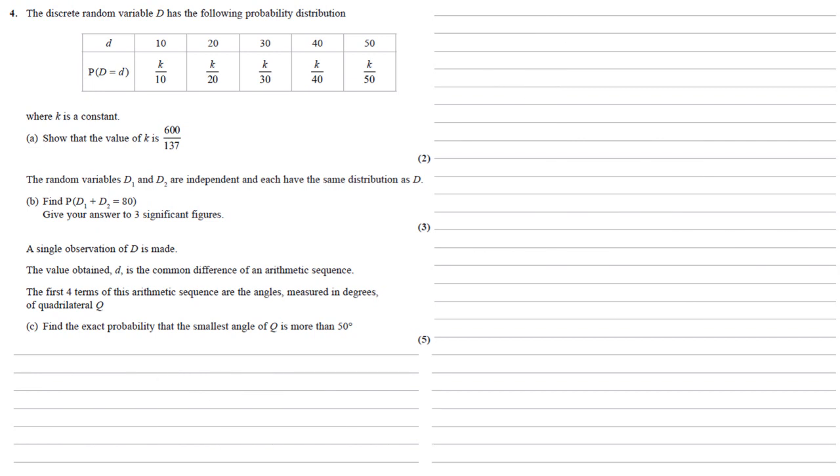A single observation of D is made. The value obtained, D, is the common difference of an arithmetic sequence. The first four terms of this arithmetic sequence are the angles, measured in degrees, of quadrilateral Q. For part C, we need to find the exact probability that the smallest angle of Q is more than 50 degrees.